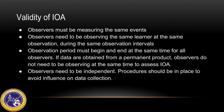Observers must be measuring the same events, observing the same learner during the same observation intervals. All observers must be positioned so they have a similar view of the learner and the environment. The observation period must begin and end at the same time for all observers. If data are obtained from a permanent product, observers do not need to be observing at the same time. Copies of the permanent product should be given to each observer, and they are not supposed to see the other observer's scores.